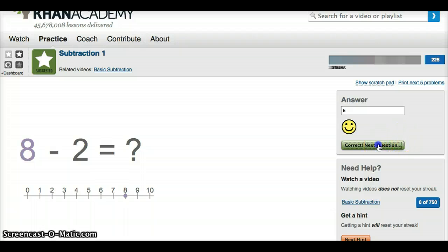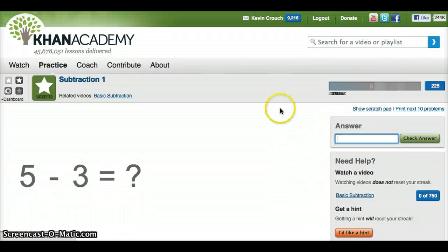Check my answer, correct, go on to the next. Because I got the hint though, it resets my streak. To be considered proficient, you need to be able to answer at least 10 in a row in proficiency.